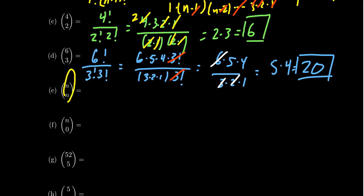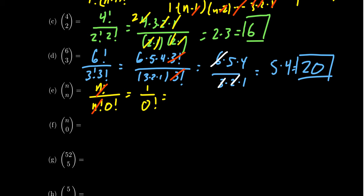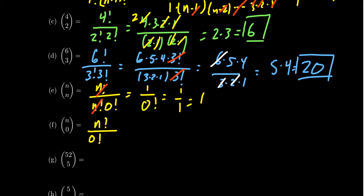If you take n choose n, that looks like n factorial over n factorial times 0 factorial. The n factorials cancel, leaving 1 over 0 factorial. Since 0 factorial is 1, not 0, this equals 1. On the other hand, n choose 0 is n factorial over 0 factorial times n factorial. The n factorials still cancel, giving 1 over 0 factorial, which is again 1. So these two numbers turn out to be the same thing.